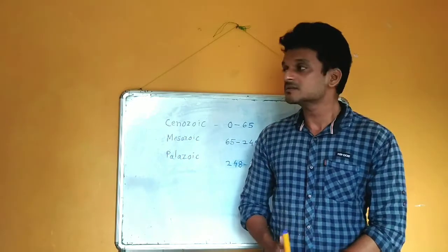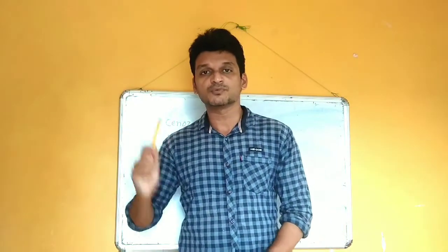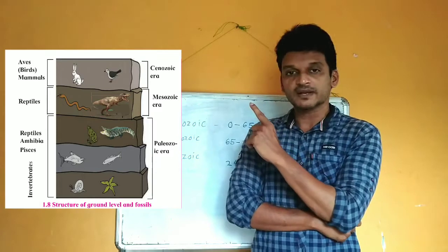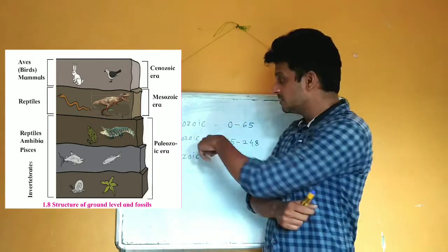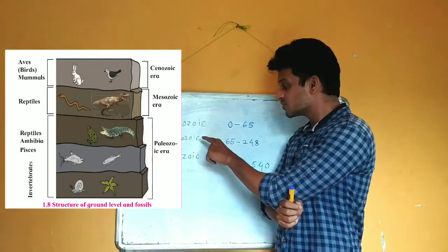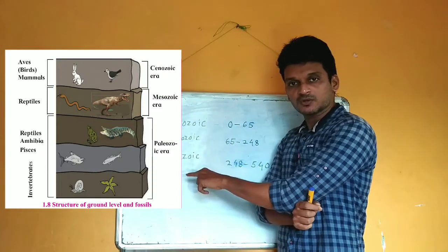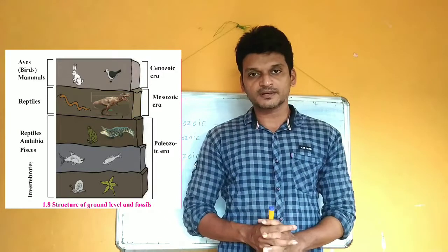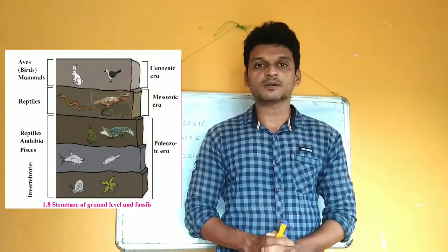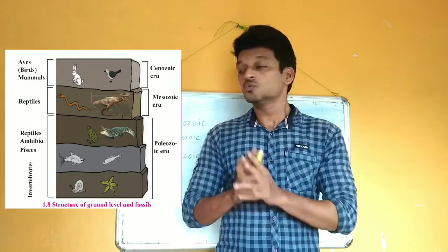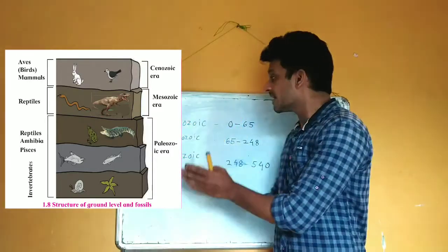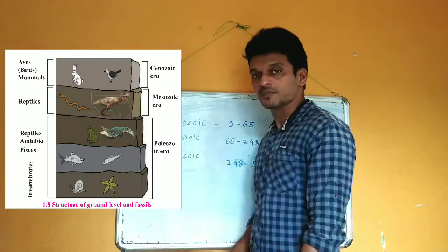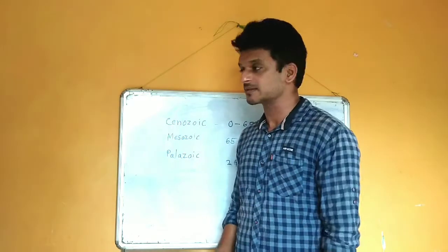To understand this, let us take a look at an important image. In that image you can see three terms: Cenozoic, Mesozoic, and Paleozoic. In front of them, different groups of animals are listed, like vertebrates and invertebrates. Let me show you one more image so you can understand these era names more precisely.